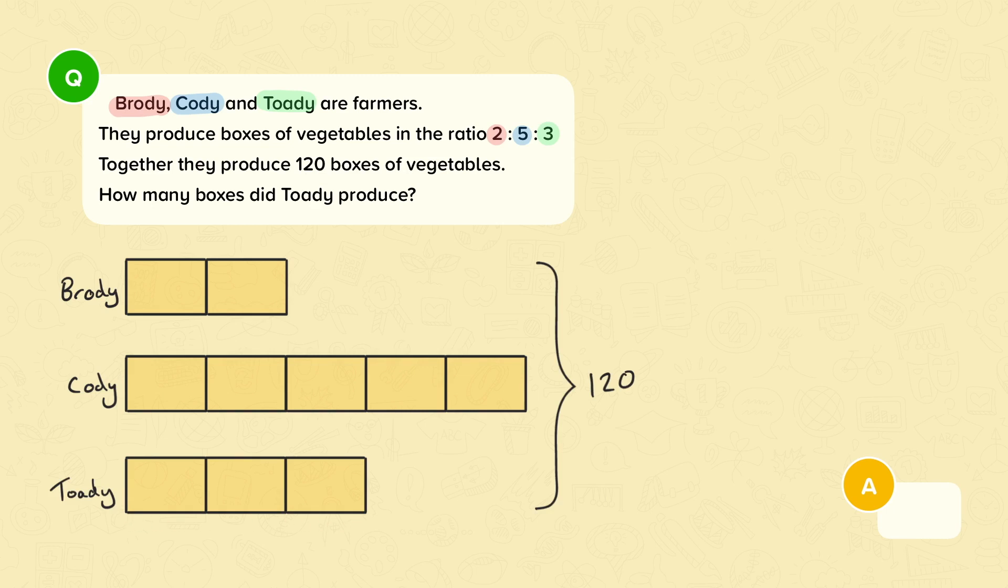To find Toady's share, we must firstly find out how much one of these parts is worth. We know that Toady has three parts. Once we know one of them, we can work out his total share. There are two parts here, five parts here, and three parts here. Two plus five plus three is ten. There are ten parts in total. 120 divided by ten is twelve. So one part is worth twelve. Toady has three parts. To work out his share, we must do three multiplied by twelve, which is 36. So Toady produced 36 boxes of vegetables. Well done if you managed to work that out.